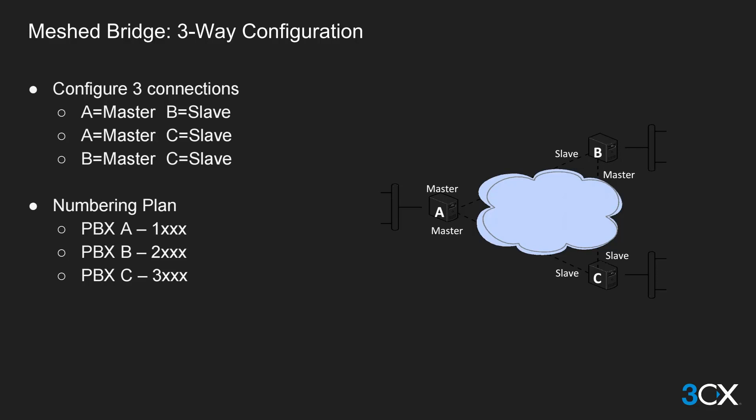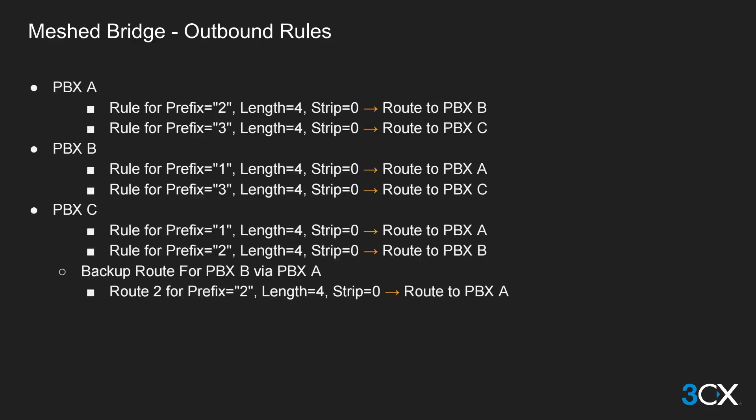The numbering plans will be as follows: PBX A will have extensions in the 1000 range, PBX B in the 2000 range, and PBX C in the 3000 range. Note that the PBXs do not need to have the same extension digit length to be bridged together. Calls will be sent from one PBX to the other via the outbound rules, and we can configure an outbound rule for each PBX to contact its connected bridge PBX — a total of six outbound rules in this scenario.